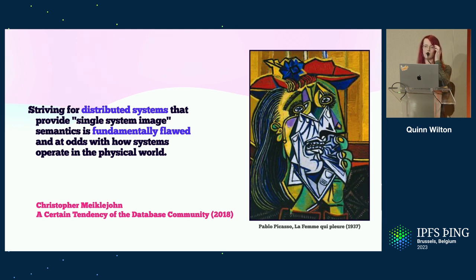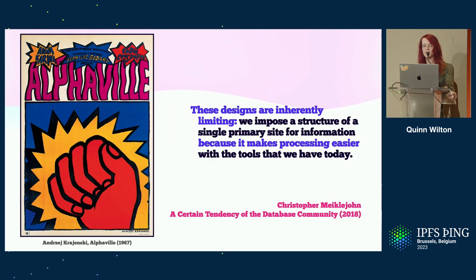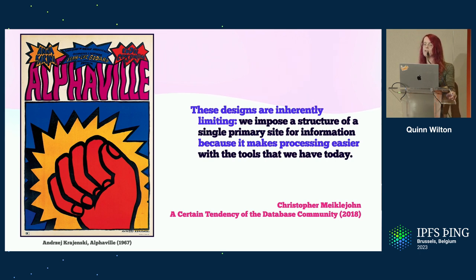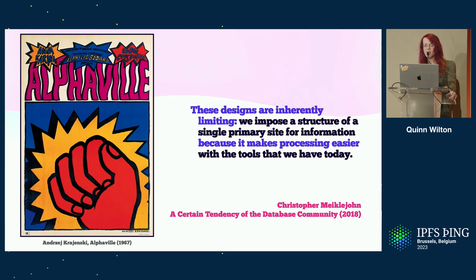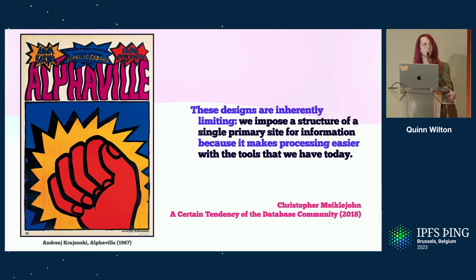Mickeljohn proposes that rather than targeting global consistency with some primary node, systems should instead be built to treat the local knowledge recorded at each node as an accurate reflection of that node's view of the world. He argues that to do otherwise is inherently limiting, but claims these designs are common because of the way they simplify the use of existing tooling. He then briefly acknowledges the incompatibility between these designs and the constraints of peer-to-peer networks and large-scale edge computation, where rather than one globe-spanning network, we end up with a number of smaller, sometimes overlapping networks, computing over different slices of the total set of data, with no guarantee of ever achieving or even desiring system convergence.